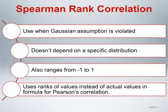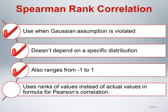Let's talk about the Spearman-rank correlation coefficient. Similar to other non-parametric procedures we have discussed previously, the Spearman-rank correlation coefficient is appropriate to use when the Gaussian assumption is violated. The Spearman correlation coefficient does not depend on any specific distribution, and it also ranges from negative 1 to positive 1, like the Pearson correlation coefficient. It uses the ranks of the values instead of the actual values, and can be calculated using the same formula for Pearson's correlation coefficient applied to these ranks.